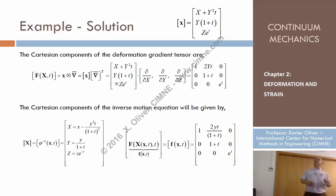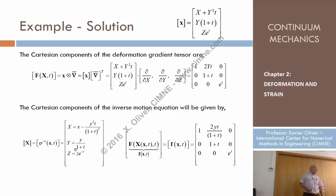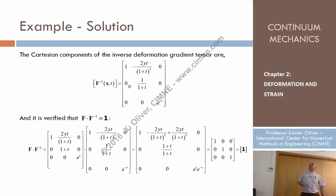Now let's compute F⁻¹. I compute F inverse by looking at the inverse equations of motion and taking the transposed spatial gradient of that. By doing that operation, we obtain the expression for F⁻¹, the inverse Green deformation tensor, which naturally depends on the spatial coordinates x, y, z.